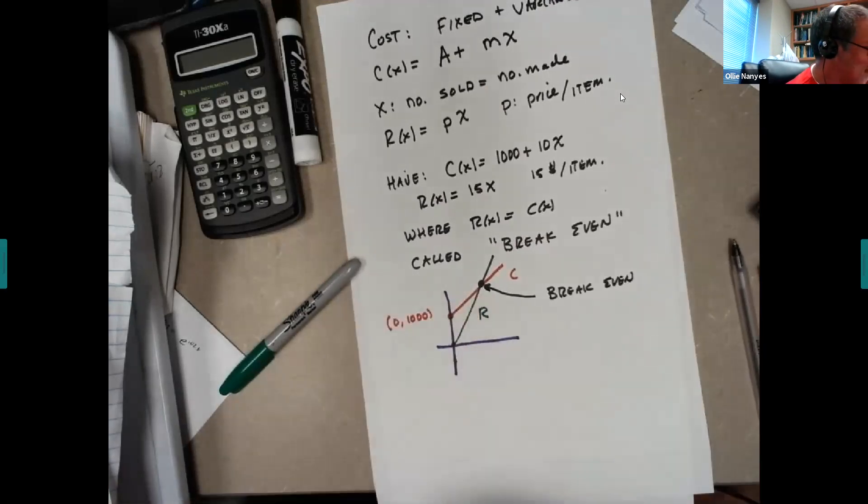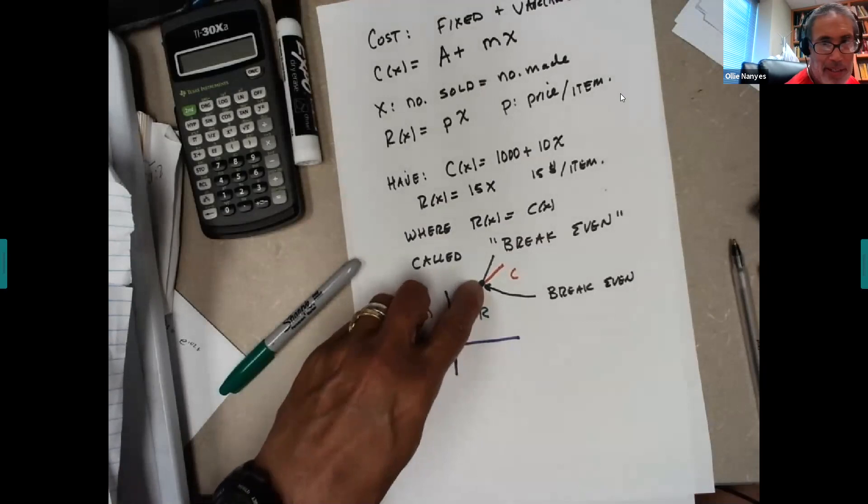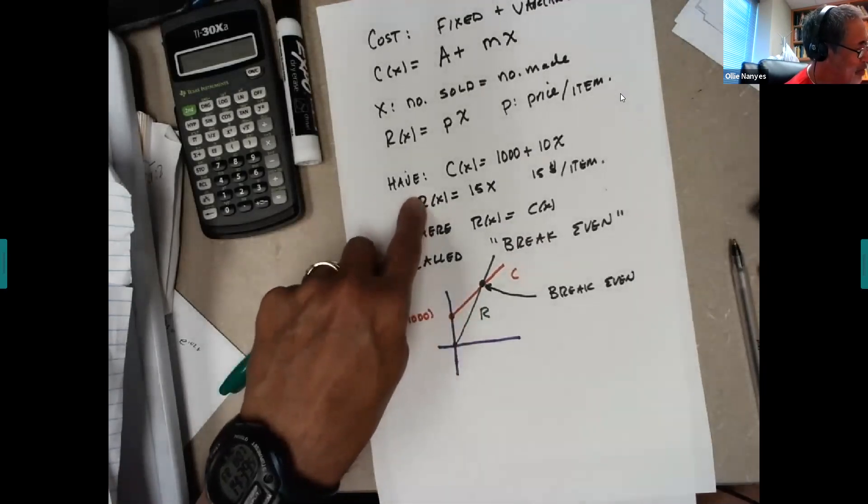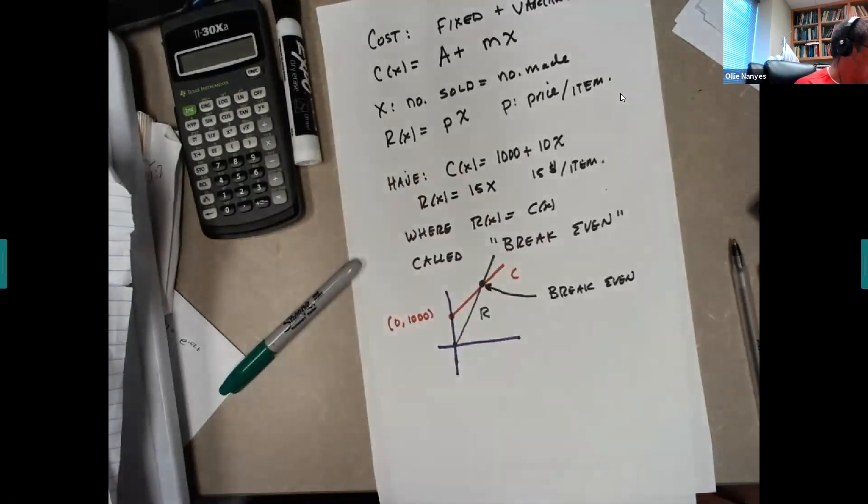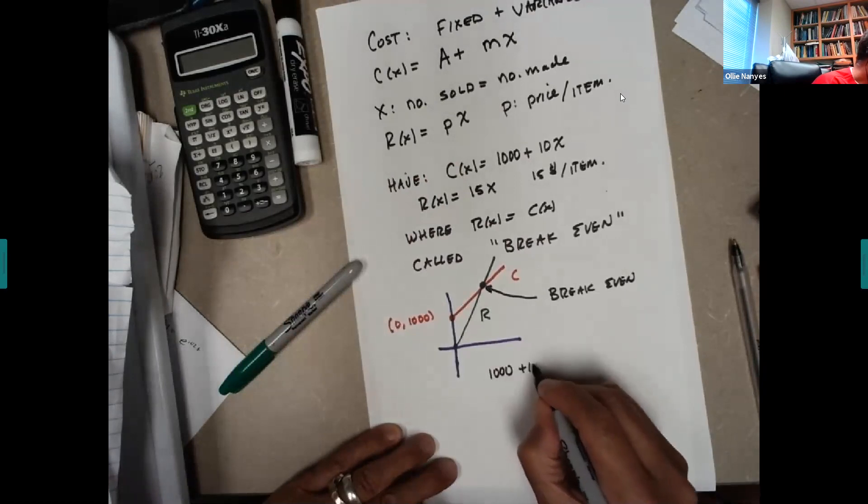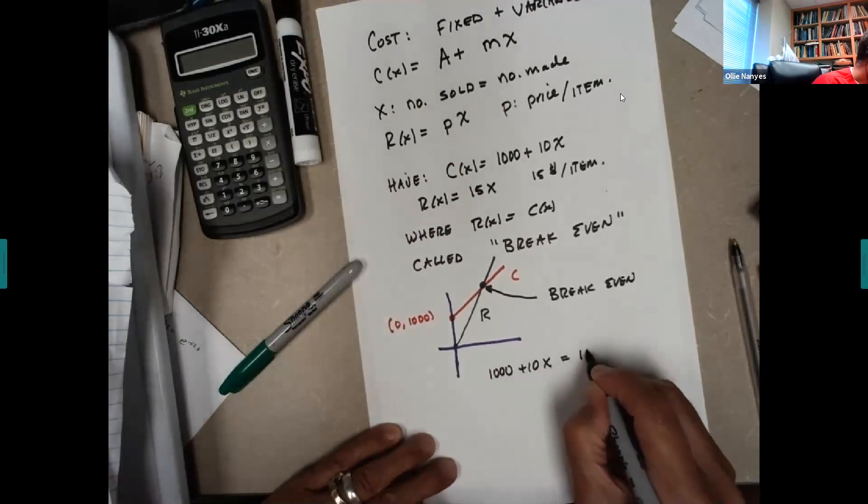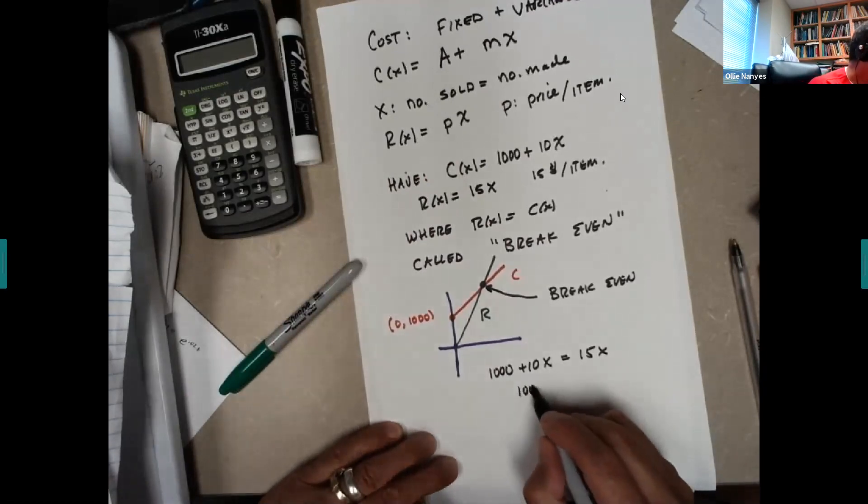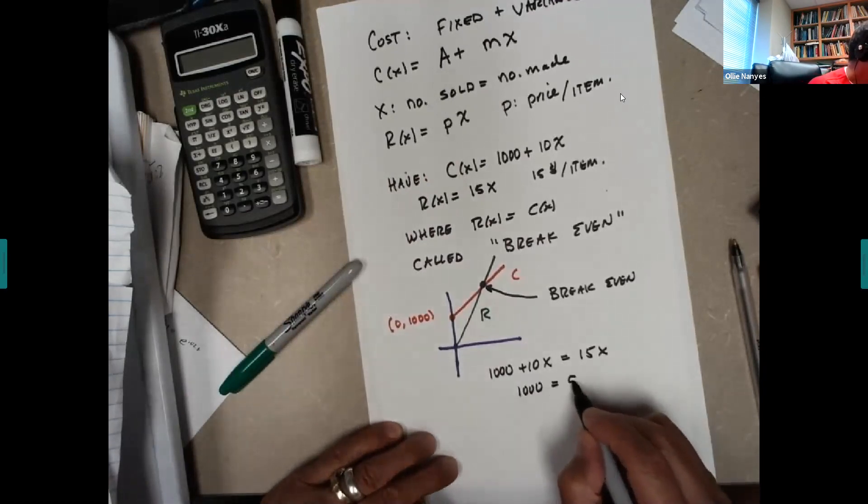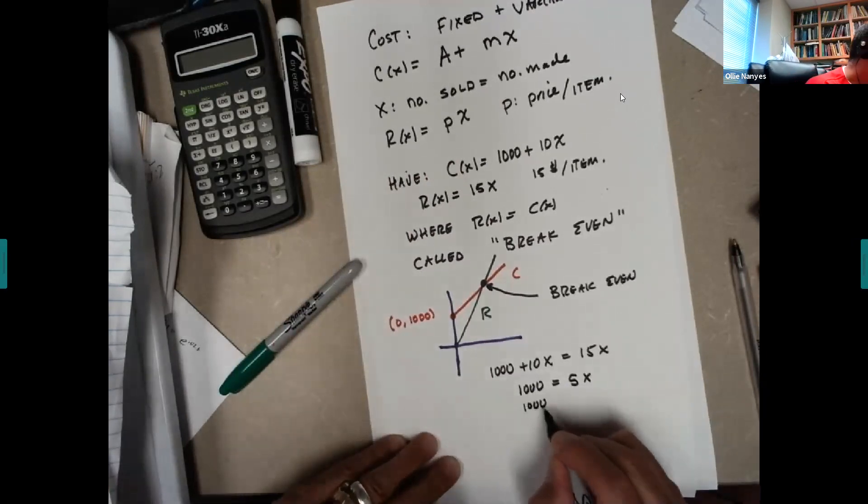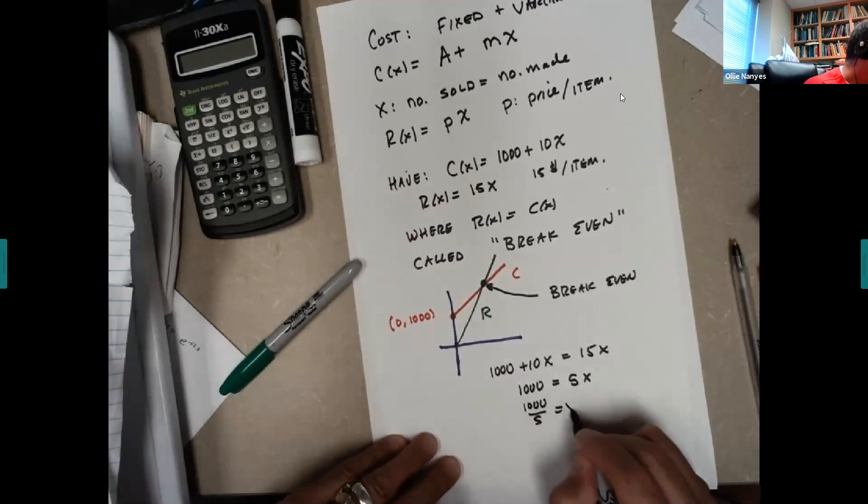Well, what you do, if you notice at this point, the Y value for R and the Y value for C are the same. So you equate the two. Then you do a little algebra, take 10X away from both sides. And then all you do is divide by five. So X is 200.